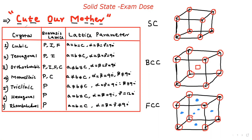What are the first important points? Seven crystal systems and fourteen Bravais lattices. What is the trick? The mnemonic is 'Cube, our mother.' C means cube, T means tetragonal, O means orthorhombic, M means monoclinic, T means triclinic, H means hexagonal, and R means rhombohedral.